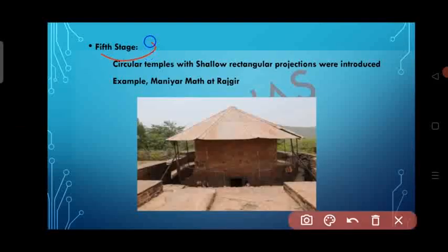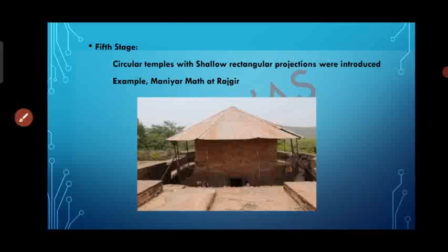In the fifth stage, circular temples with shallow rectangular projections were introduced and other features remained the same as in the previous phases. Example: Maniyar Math at Rajgir.